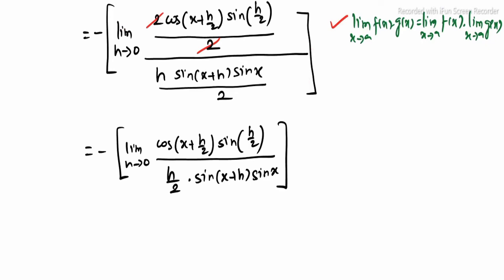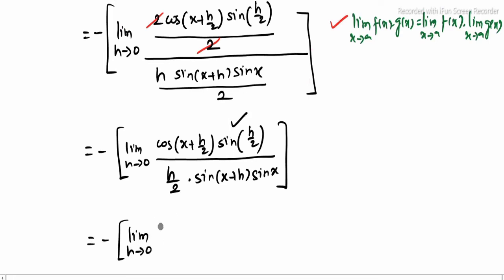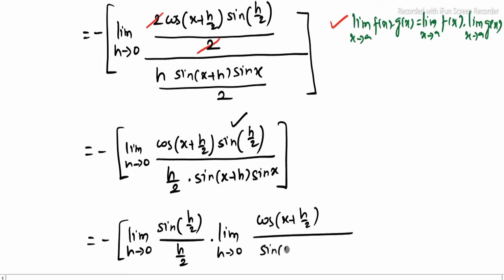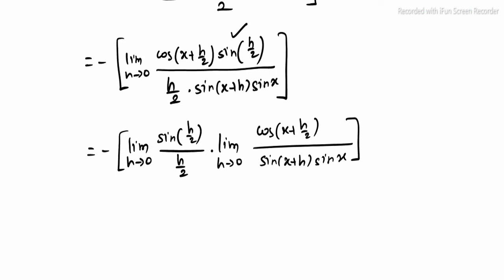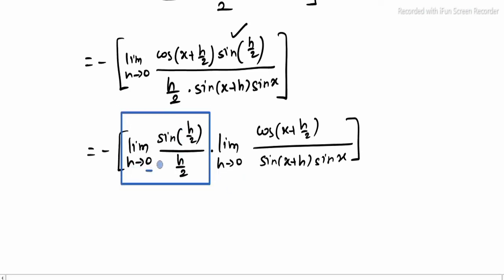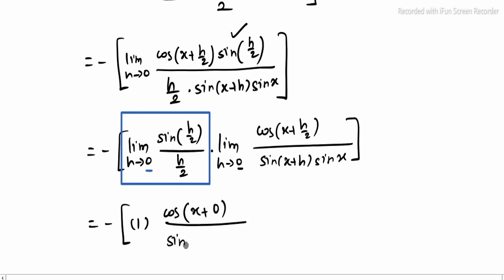Now applying the property: minus of limit h tending to 0, first term sin of h by 2 divided by h by 2, into limit h tending to 0, cos of x plus h by 2, whole divided by sin of x plus h into sin x. The first term value is 1, because h tending to 0, sin(h/2) divided by (h/2) is 1. When h approaches 0, cos of x plus 0 by 2 is cos x, divided by sin of x plus 0 into sin x.